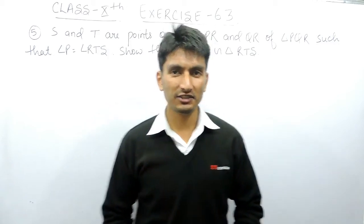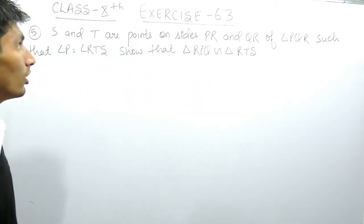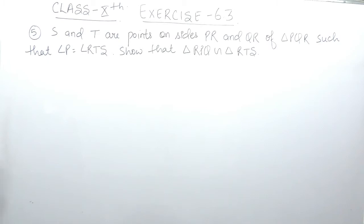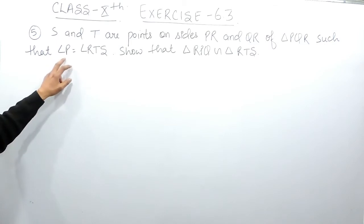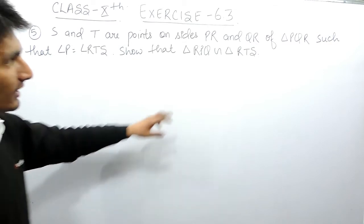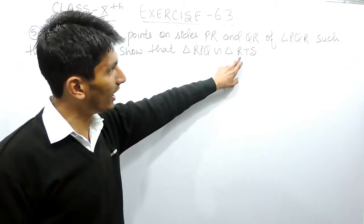Hello everyone. In this video we are going to solve question number 5 of exercise 6.3. The question says S and T are points on sides PR and QR of triangle PQR such that angle P equals angle RTS. You have to prove that triangle RPQ is similar to triangle RTS.